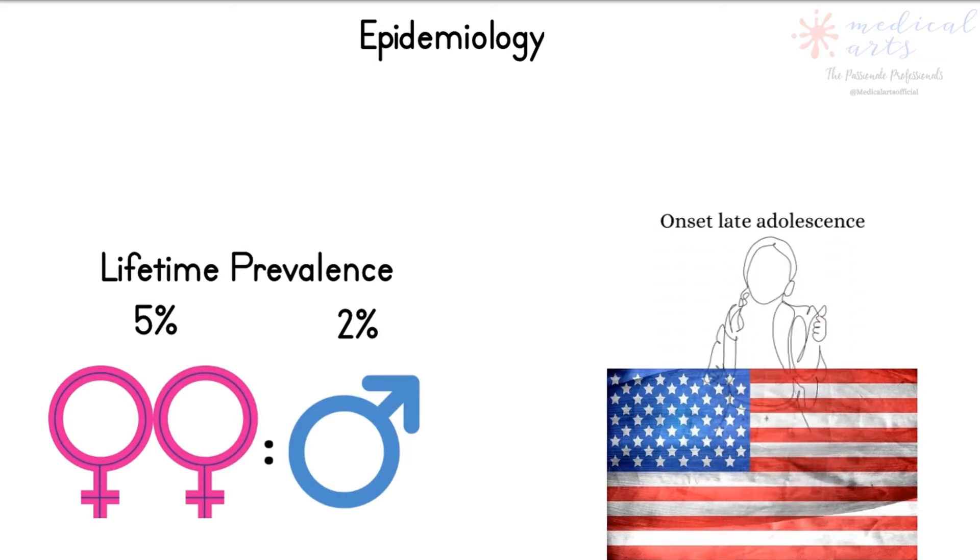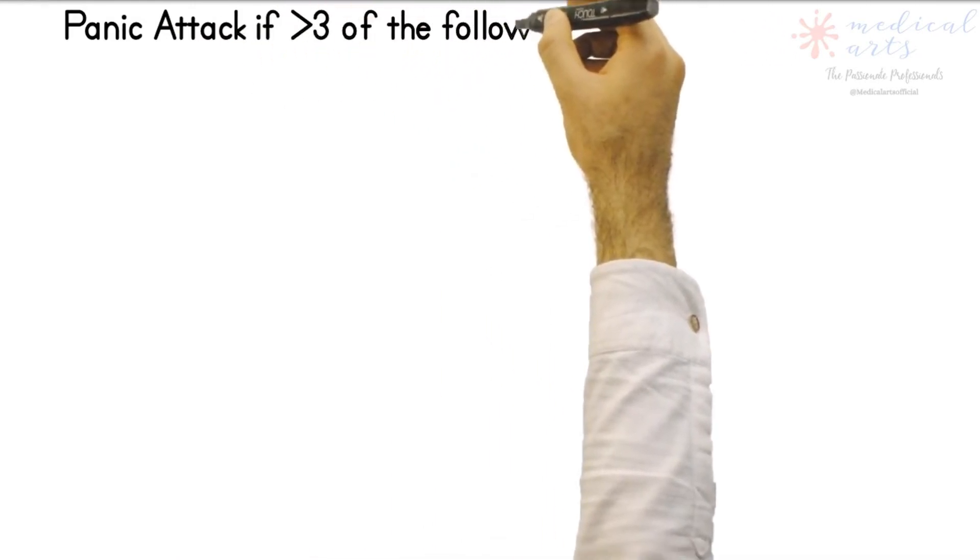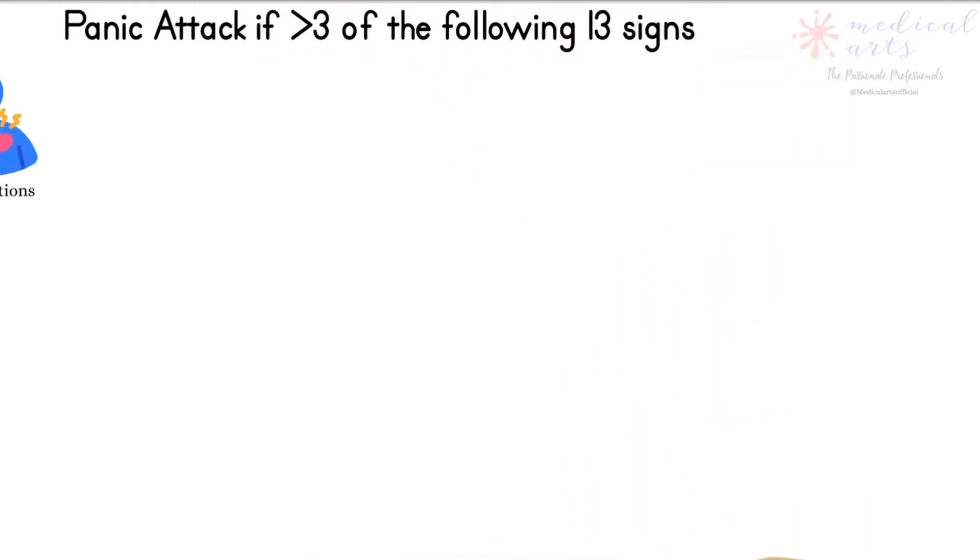The typical age of onset is late adolescence through the late 30s. A typical panic attack is associated with four or more of the following signs.